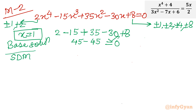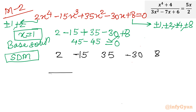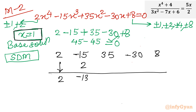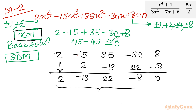That means we can apply Synthetic Division. Write all the coefficients of the quartic equation: coefficient of x cube is 2, coefficient of x square is minus 15, coefficient of x is 35, constant coefficient is 8. Draw a line and bring down the leading coefficient 2. Multiplying 2 by 1 gives 2; minus 15 plus 2 is minus 13; minus 13 times 1 is minus 13; 35 minus 13 is 22; 22 times 1 is 22; minus 30 plus 22 is minus 8; minus 8 times 1 is minus 8; 8 minus 8 equals 0. These are the coefficients of the resulting cubic equation.